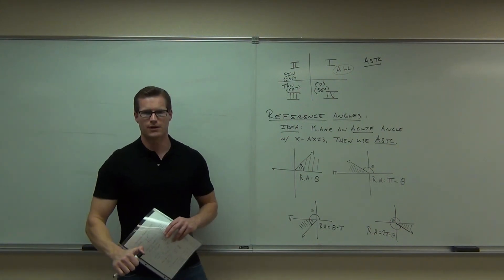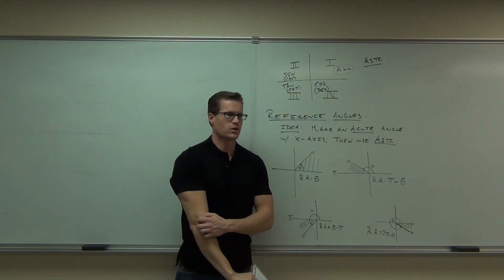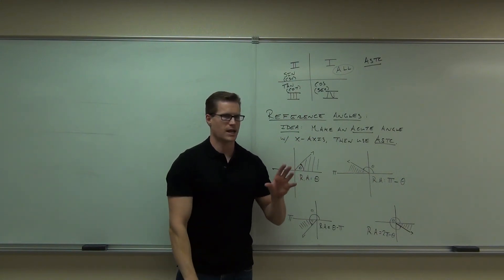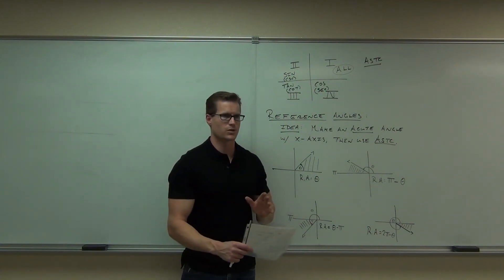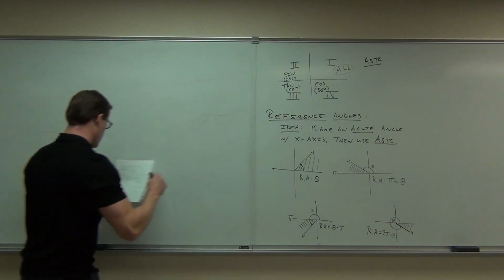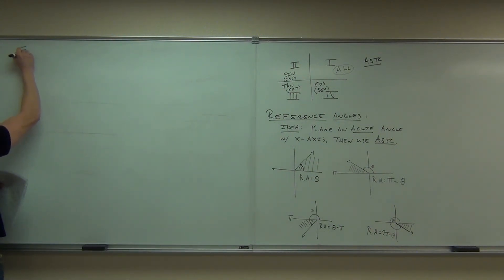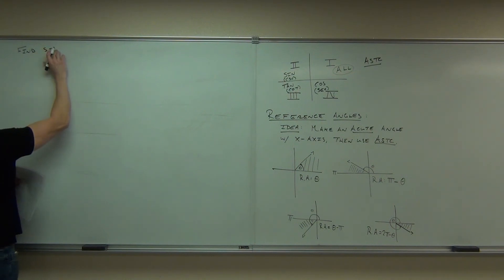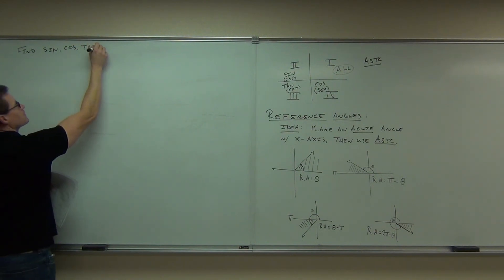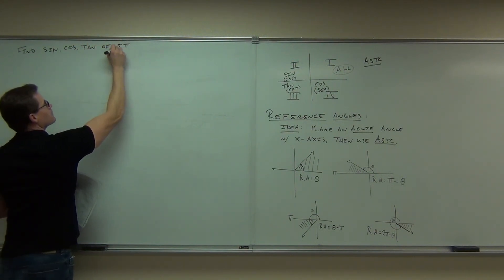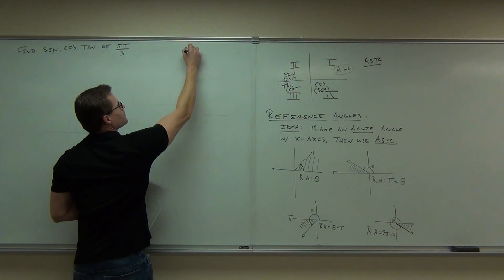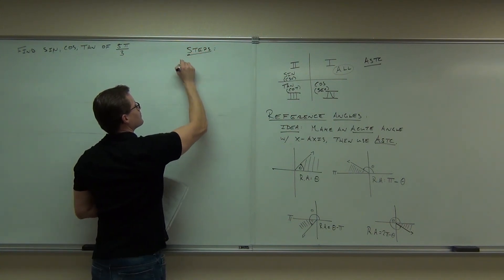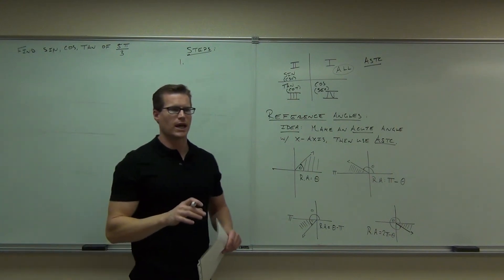If you have a unit circle handy, absolutely you can do it. If you don't, all you need to do is memorize sine, cosine, and tangent for your first quadrant angles, then use ASTC. That's what I'm showing you here. To find sine, cosine, and tangent of 5 pi over 3 using reference angles, the first thing you do is locate which quadrant it's in — in other words, you graph it.